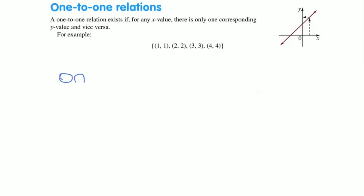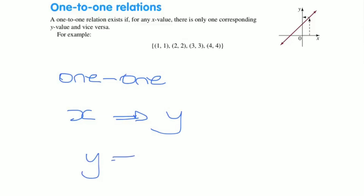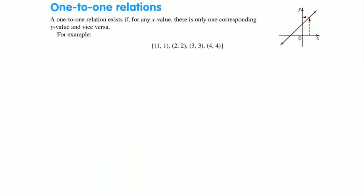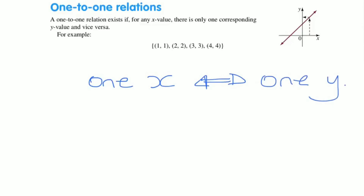A one-to-one relationship basically says that for every x value in our rule, this will generate exactly one y value. And if we know the y value, every y value comes from exactly one x value. In other words, one x value corresponds to exactly one y value. Virtually every straight line of the form y equals mx plus c will be a one-to-one.